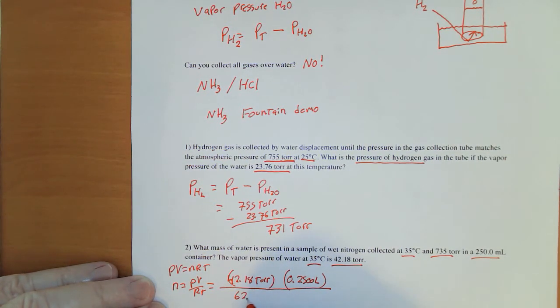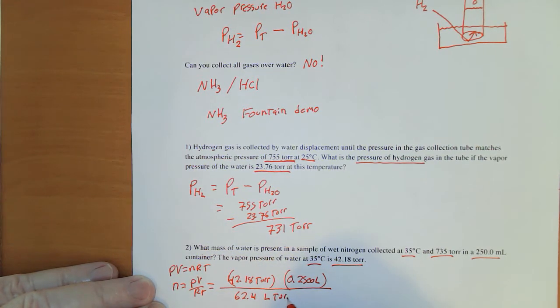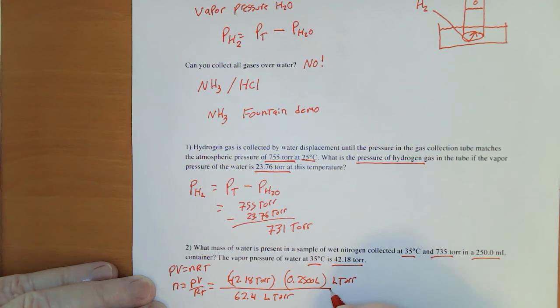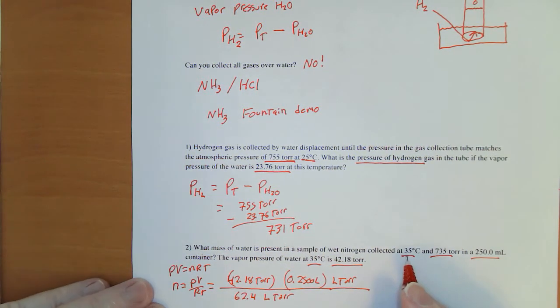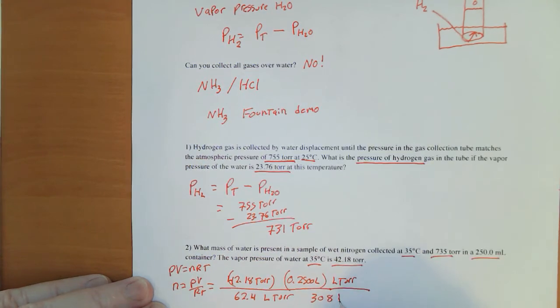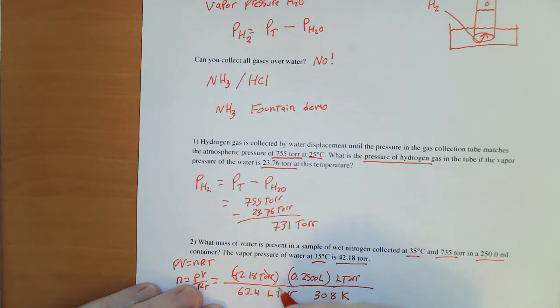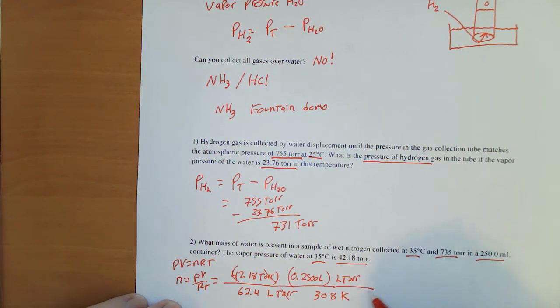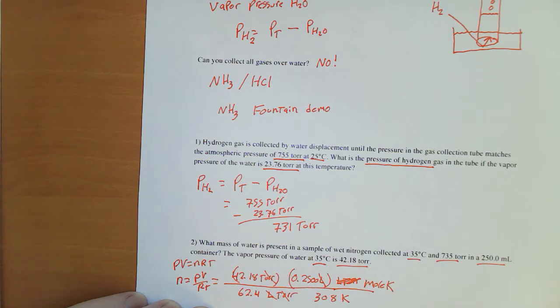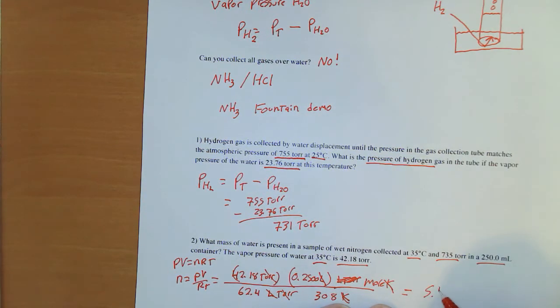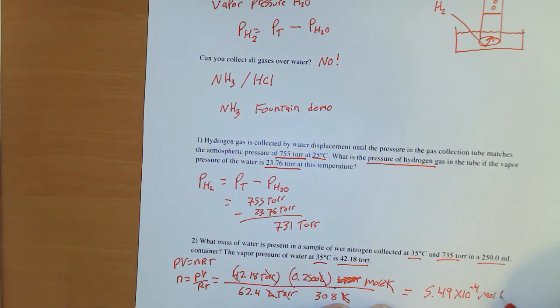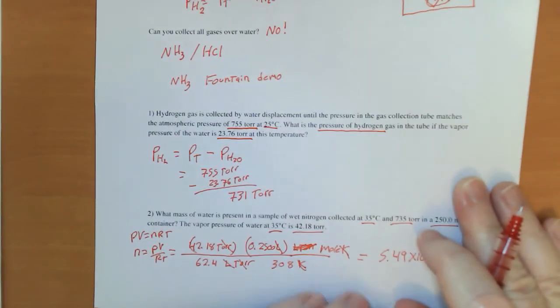So the volume was 0.2500 liters. For R, I'm going to use 62.4 because the pressure was in torr. And then the temperature, 35 degrees, will be 308 kelvin. All right, torr is gone. So I miswrote that: liter torr per mole kelvin. Sorry about that. Liter, liter. Kelvin, kelvin. This gives me a tiny amount: 5.49 times 10 to the minus 4th moles of water.